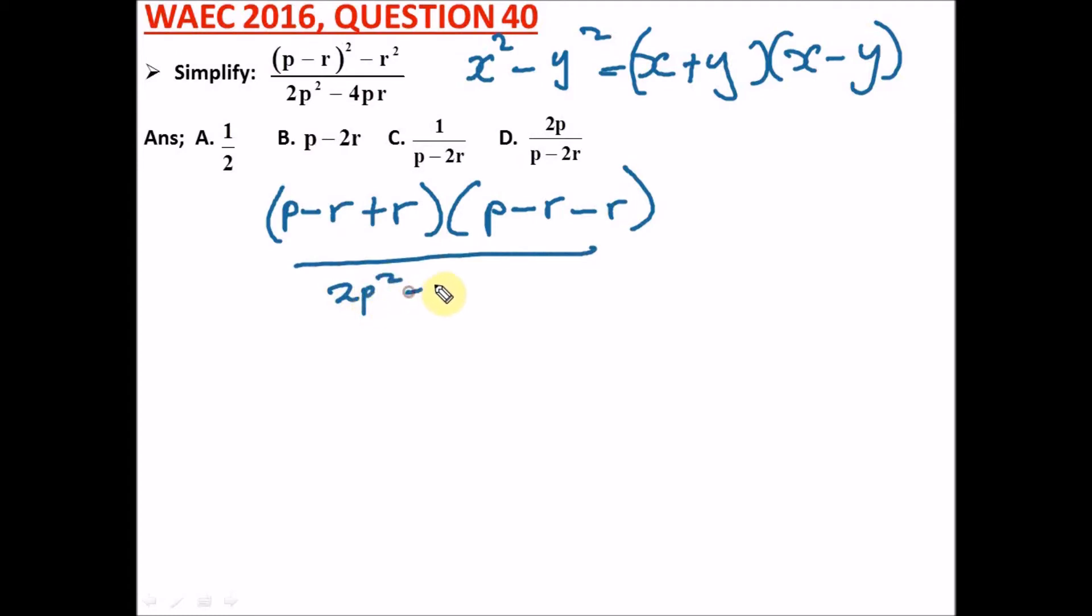So what would this give us? Here minus r would cancel out plus r, and here we have minus r, and this will give us minus 2r. So we're left with p bracket p minus 2r.